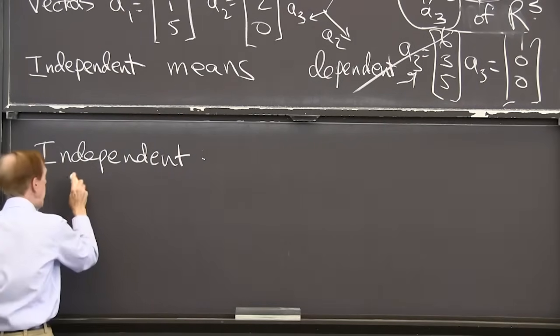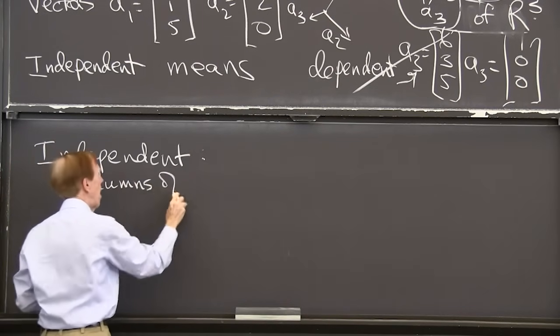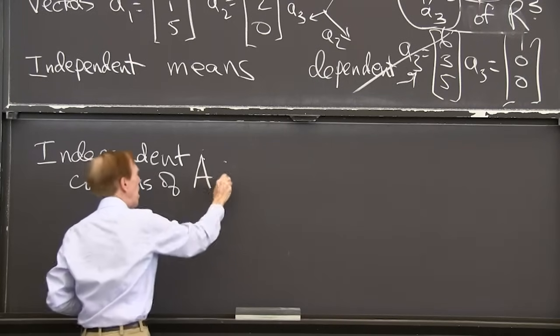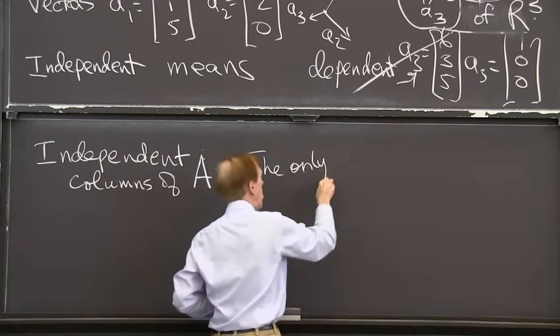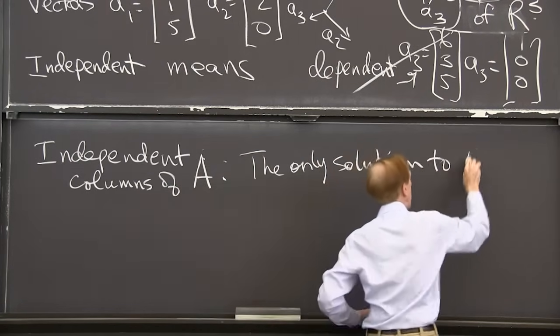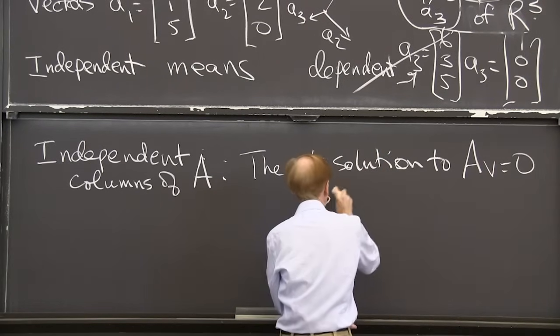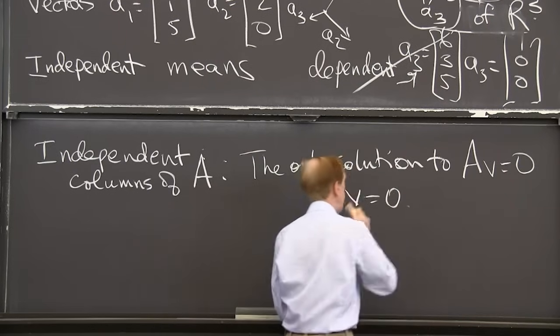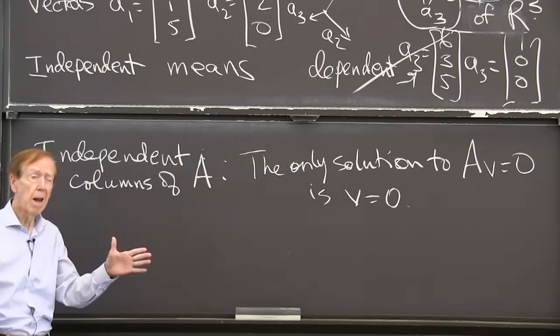So independent columns of a matrix. Independent columns of a matrix A means the only solution to Av equals 0 is v equals 0.